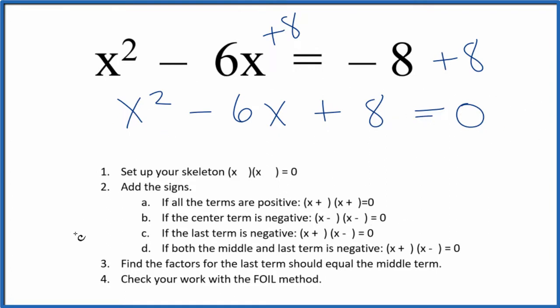And this is much easier to work with. We can follow these rules here, where we use a skeleton equation, and we find the factors for the last term, 8, that add up to the middle term, negative 6.